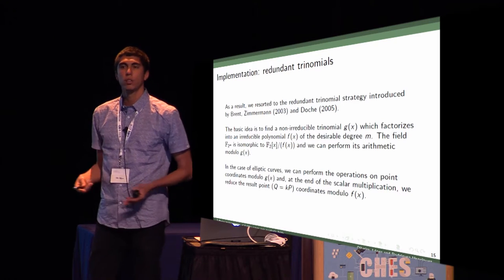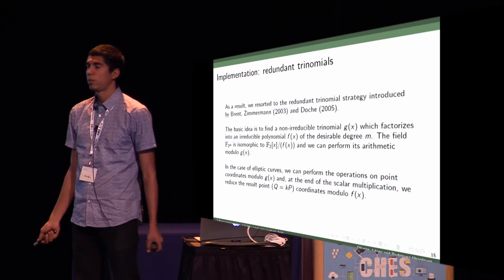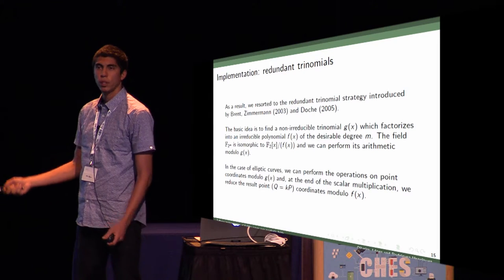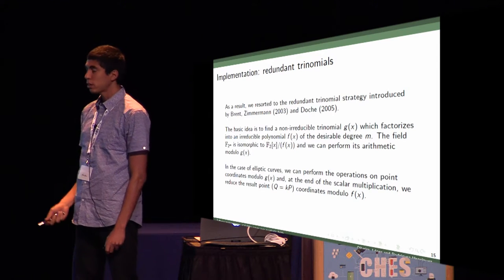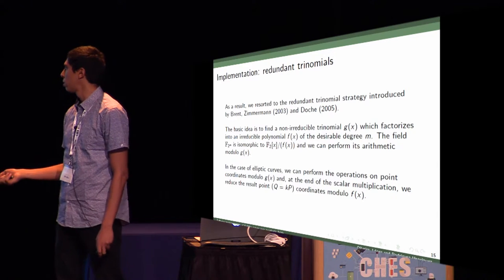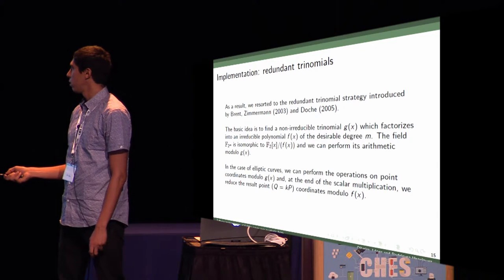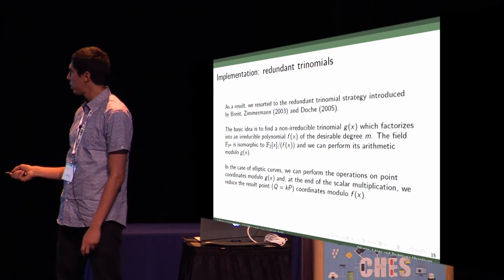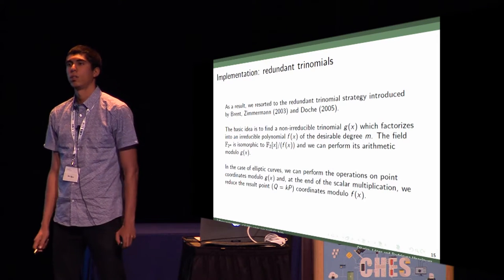In the case of Koblitz curves, all operations during the main loop are performed with point coordinates reduced modulo G(X), but at the end of the scalar multiplication, we return the point Q coordinates modulo F(X). We have to perform this reduction to F(X) just at the end of the algorithm.